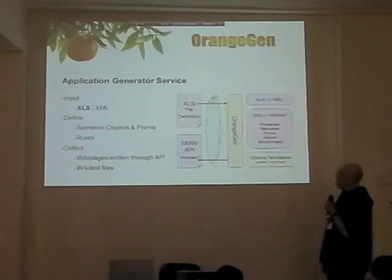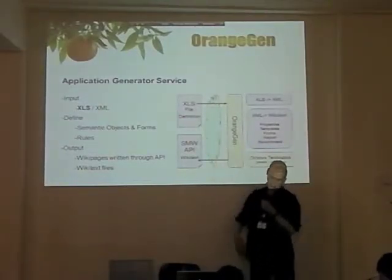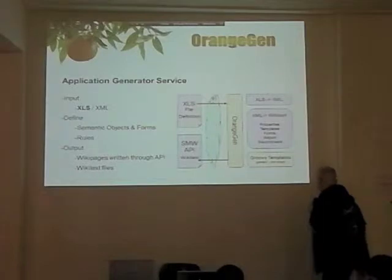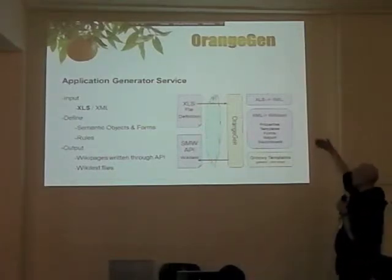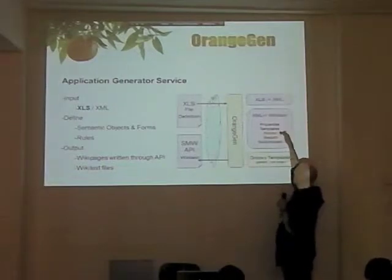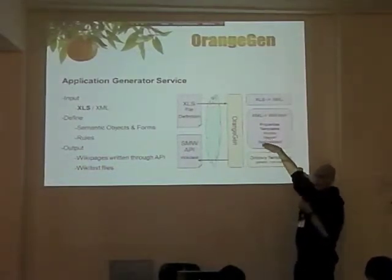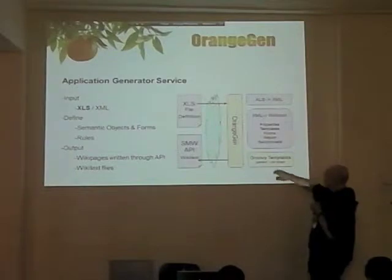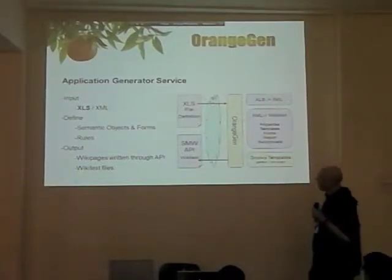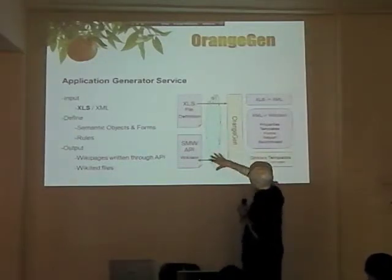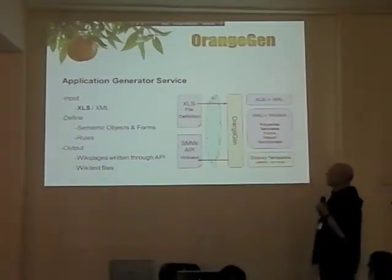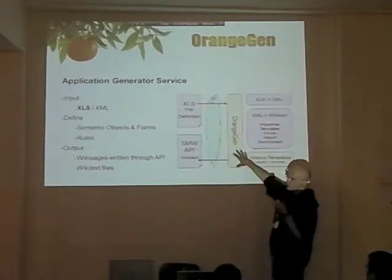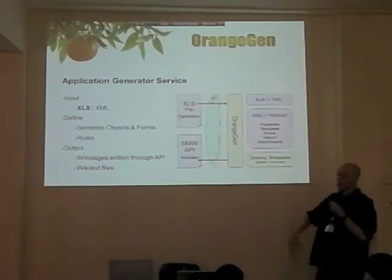Basically, this is what it is. I define the application in Excel — people know how to work with Excel, it's easy to edit. I generate an XML file from the Excel. That XML file is rendered as Wikitext. I make properties, templates, forms, a standard report, a switchboard for all the screens. Groovy templates are very important. So it goes in as Excel and comes out as Wikitext. At this moment it is not a web service, but I intend to operate it as a web service, so people can send it in Excel, give the bot access to the wiki, and then the application will be generated in the wiki.